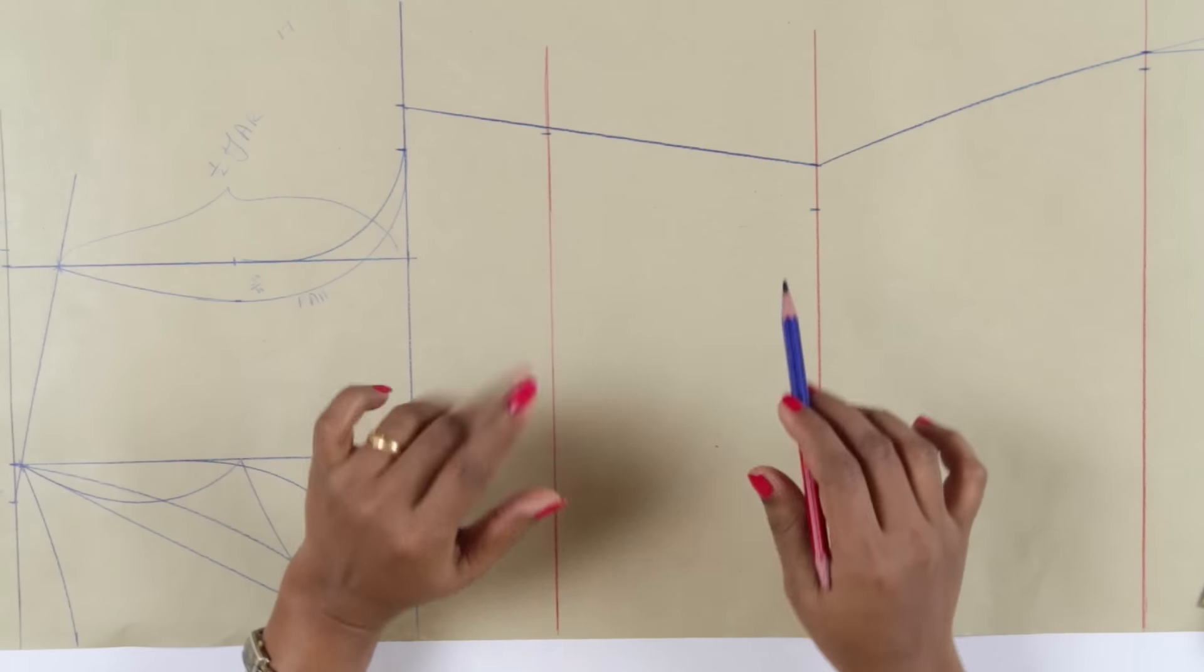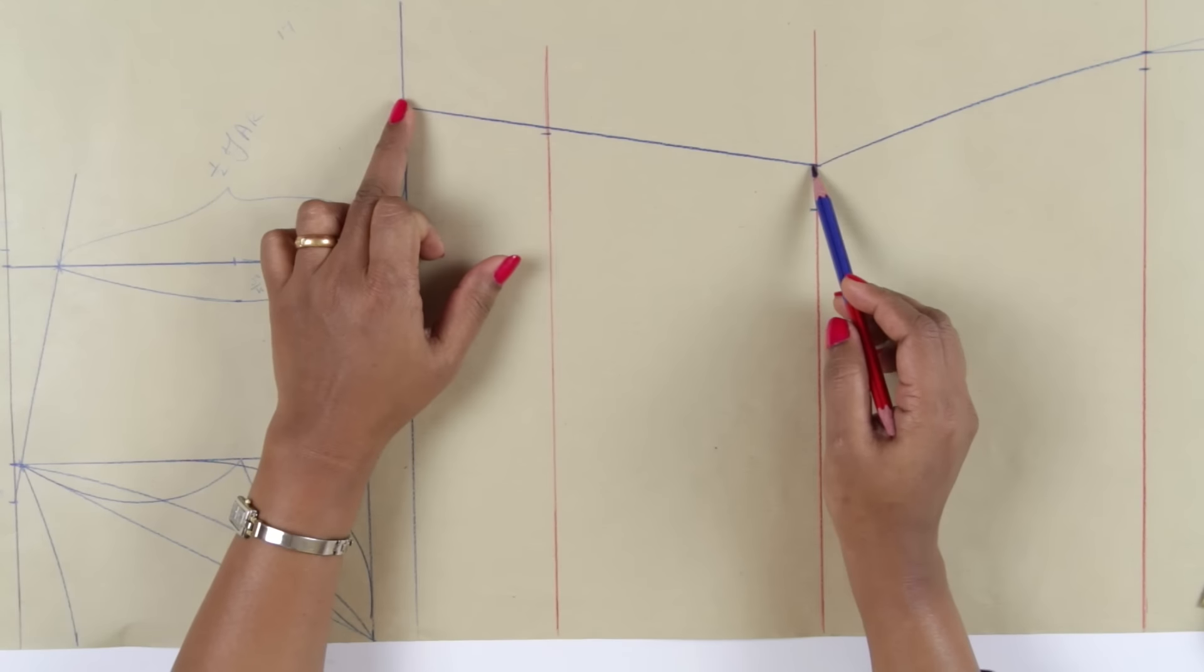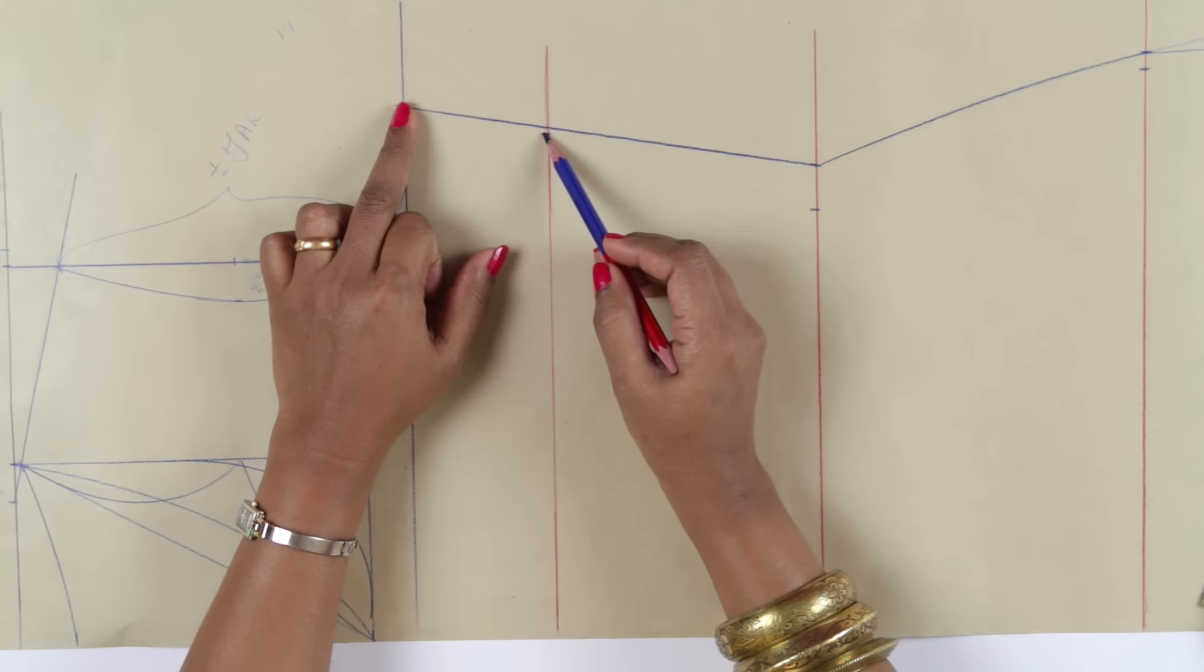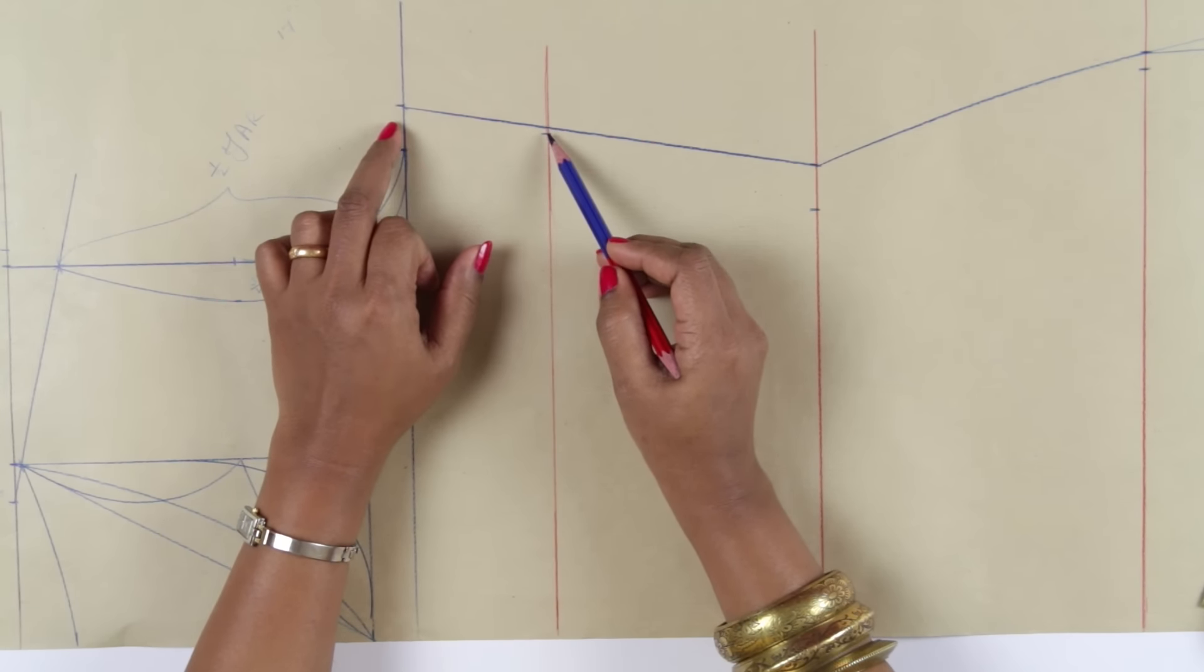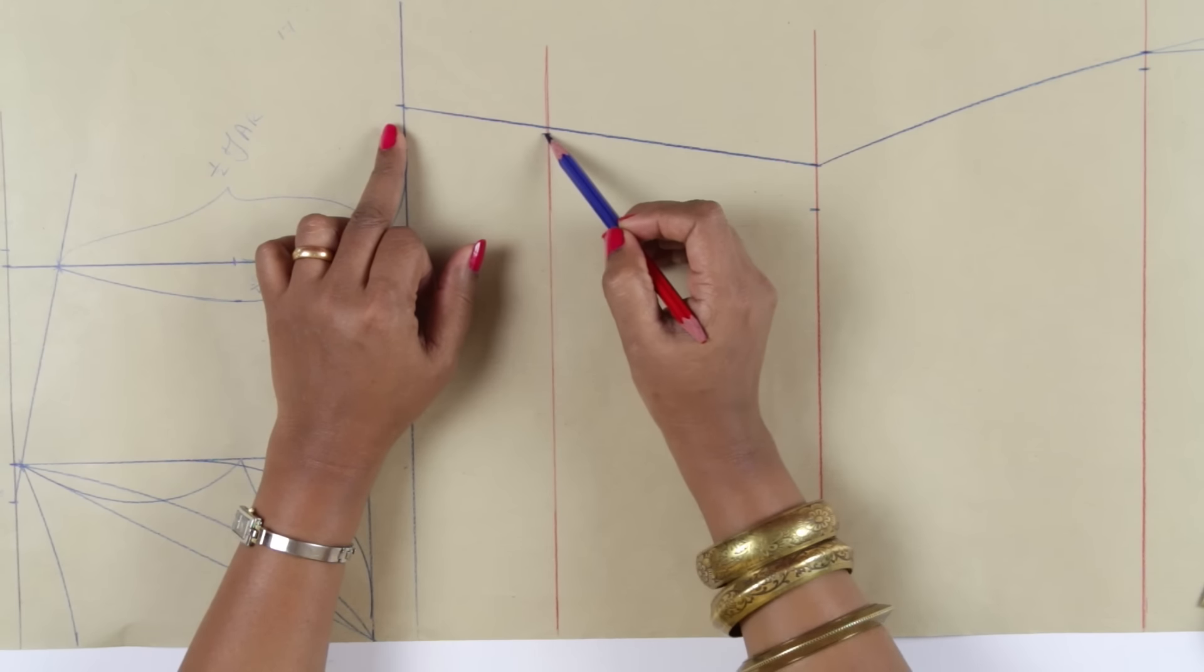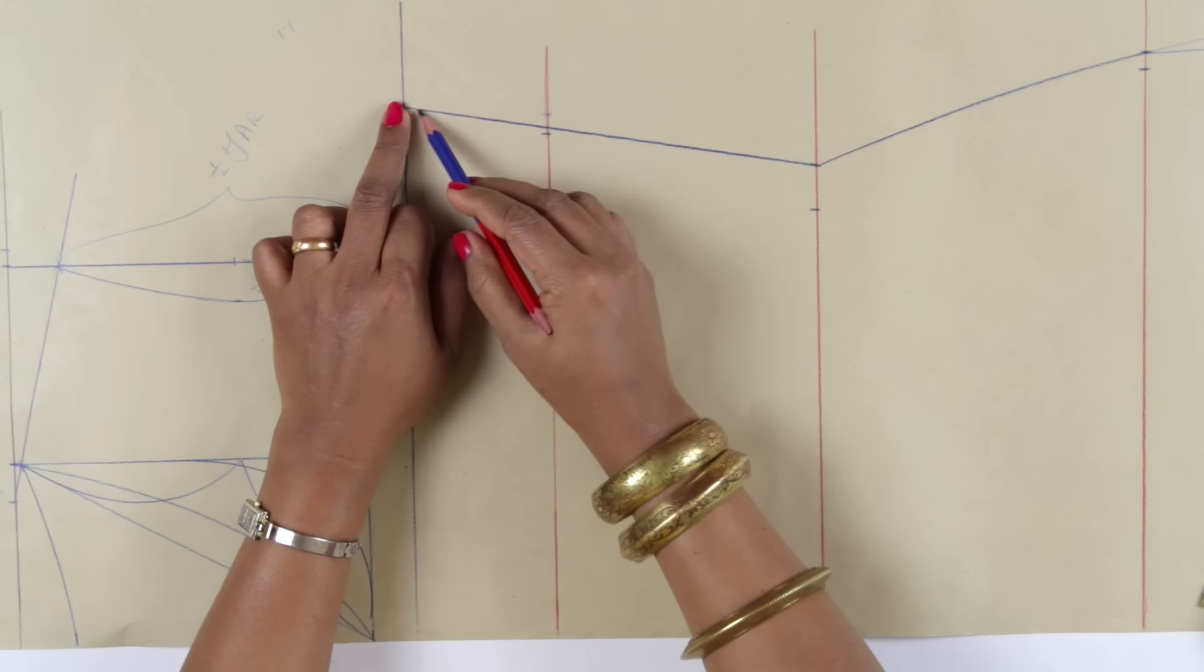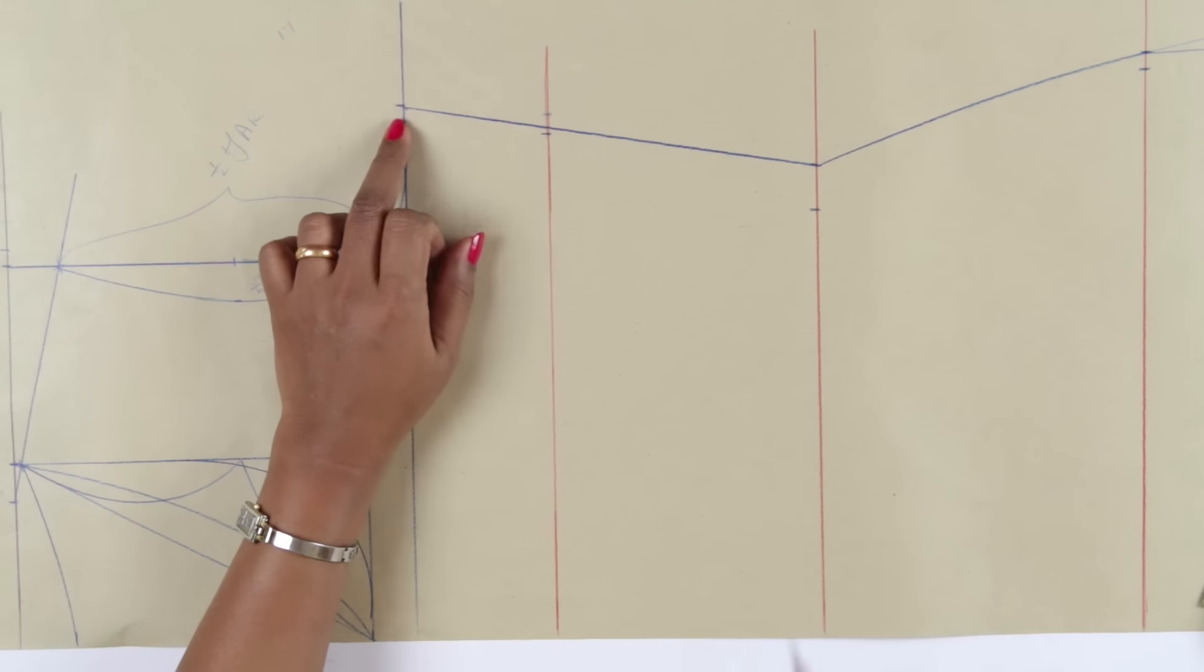Now I would like to give one more clarification. When you connect from chest to waist with a straight line, your bust point should fall on the line or within the line. But in some body proportions, it may not fall on the line or within the line, it may come out of the line. That means the dress will be tight at that point.